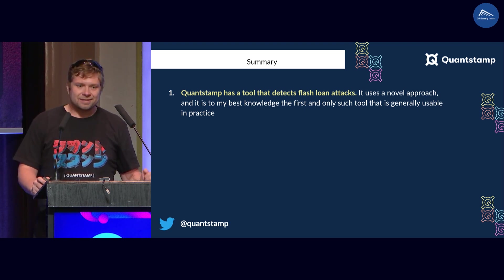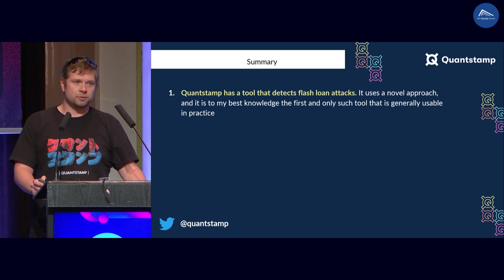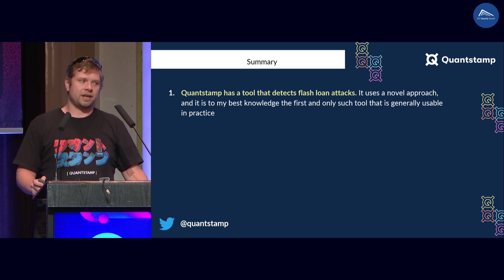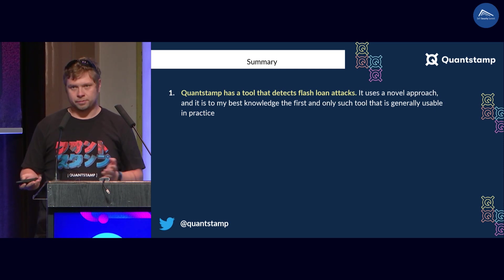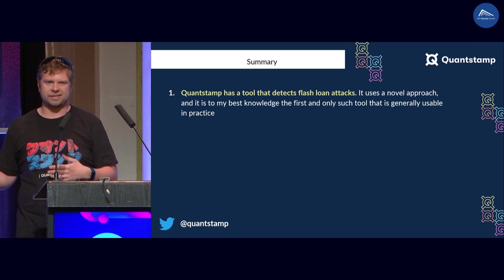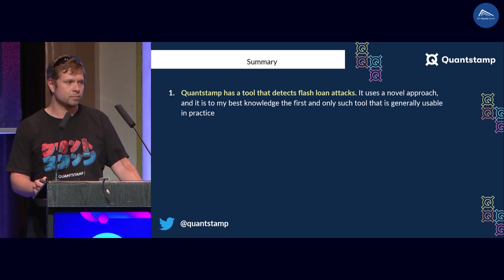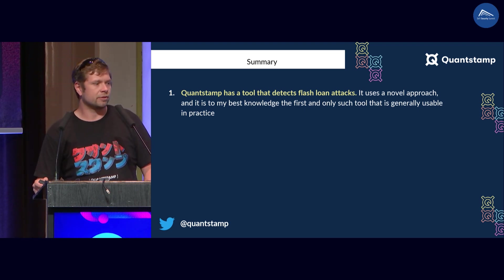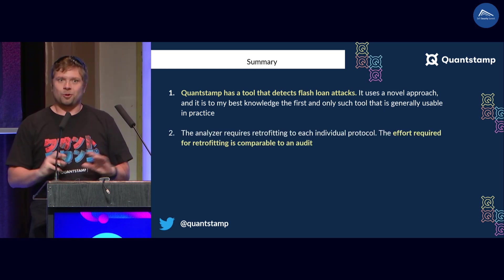In summary, at Quantstamp we now have a tool that is actually capable of automatically discovering flash loan attacks. It uses a completely new approach — you will not find any symbolic execution or formal verification in there. It uses pure numerical analysis and modeling of polynomials.